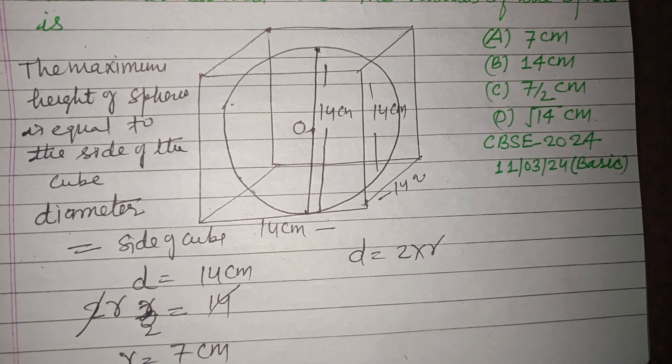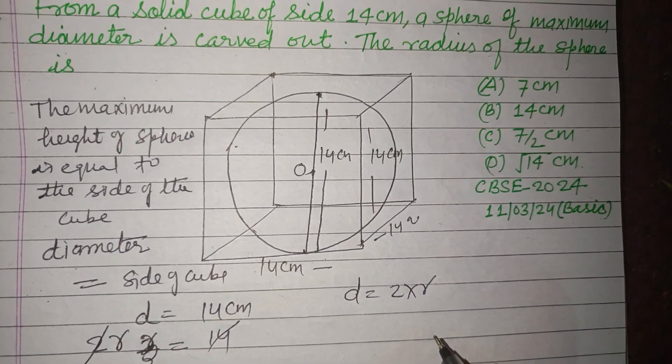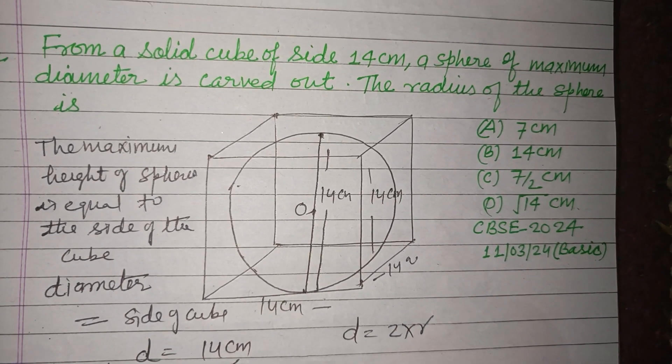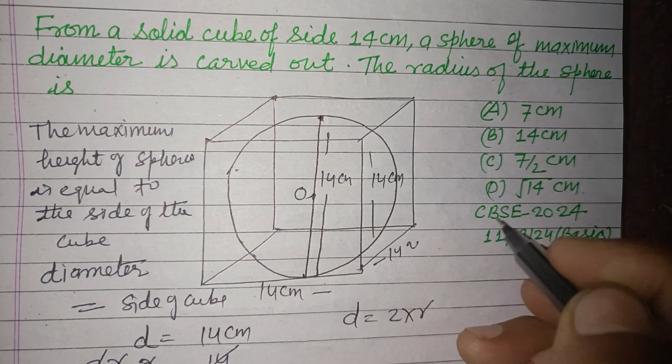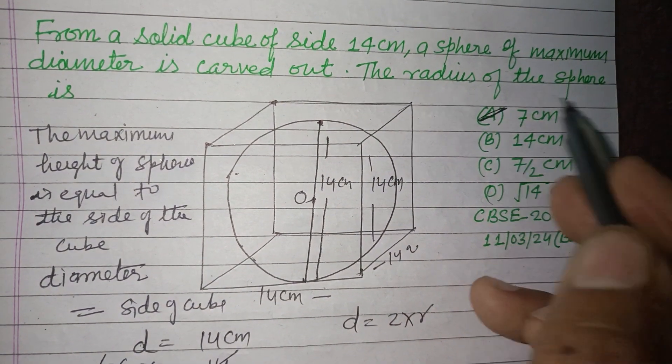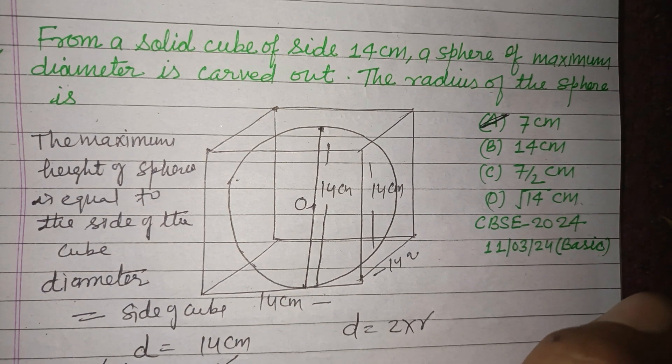So 7 cm is the radius of the sphere which is carved out from the cube of side 14 cm. So 7 cm is the correct answer.